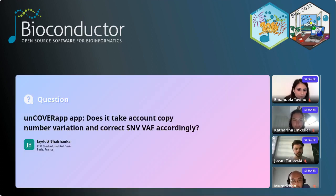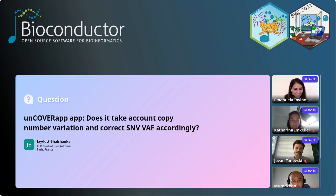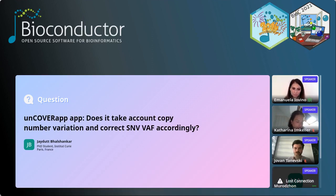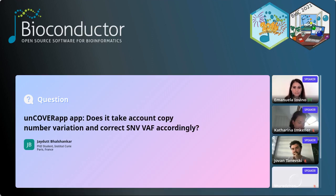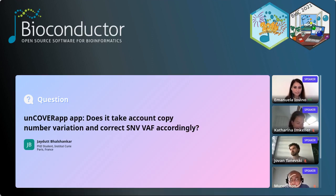Another question for Emanuela: does UncoverApp take into account copy number variation and correct the SNV's VAF accordingly? To date, no information about copy number variation can be retrieved — it's not an option. Of course, the user can use variant allele fraction to estimate the number of expected reads. For example, in a heterozygous variant, the expected allele fraction in normal situations is about 50%, but for somatic variation — especially mosaic variants — the fraction could be very low. So users can correct the variant allele fraction manually. It is possible.